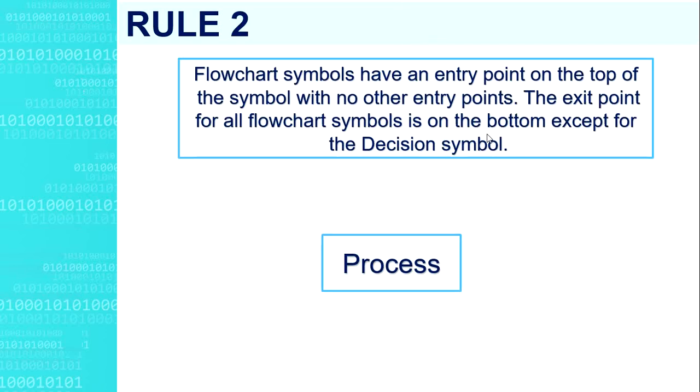Rule number two. Flowchart symbols have an entry point on the top of the symbol with no other entry points. The exit point for all flowchart symbols is on the bottom except for the decision symbol.